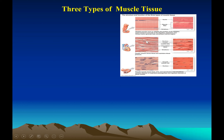Cardiac muscle is very unique — it is branched, uni-nucleate, and involuntary, found only in the heart. It has unique intercalated discs and exhibits auto-rhythmicity, meaning it can develop action potentials by itself.